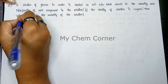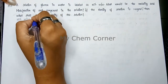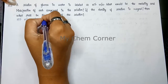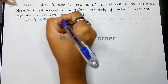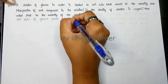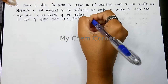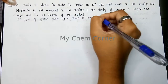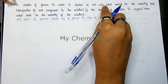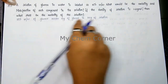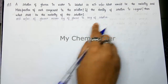10% W by W means 10 grams of glucose in 100 grams of solution. It is weight by weight, so you express that meaning in terms of grams — 10 grams of solute in 100 grams of solution.